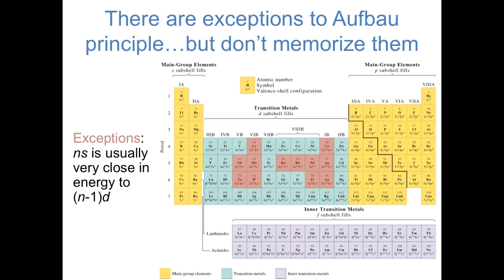There are some exceptions to the Aufbau principle, though in my opinion they're not really worth memorizing. These exceptions typically arise from the fact that some orbitals, for example ns orbitals and (n-1)d orbitals, are very close to each other in energy, so sometimes the preference for spin can outweigh the preference for orbital energy. For example, in the case of chromium, it's more favorable to have 5d electrons and 1s electron all with the same spin than what the Aufbau principle would dictate, which would be 2s electrons and 4d electrons.